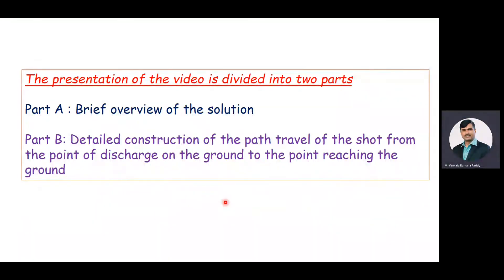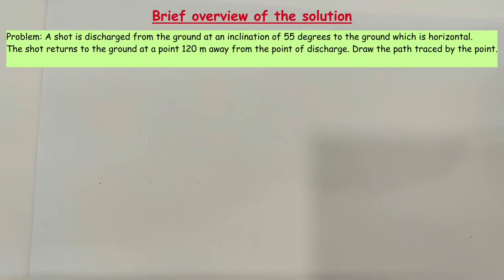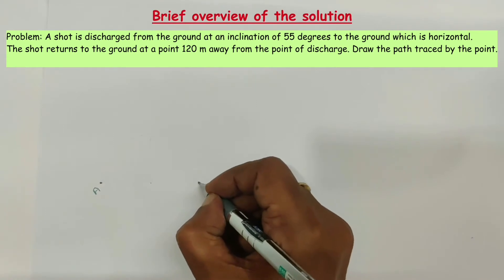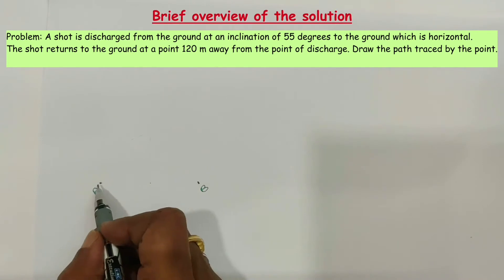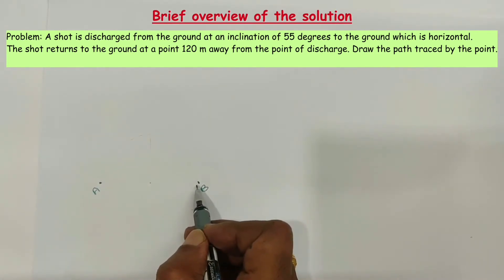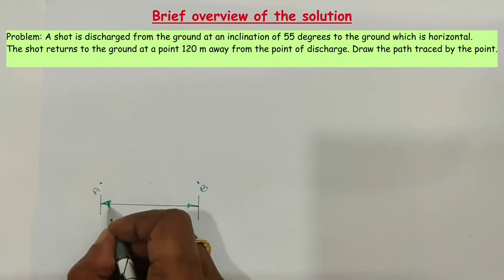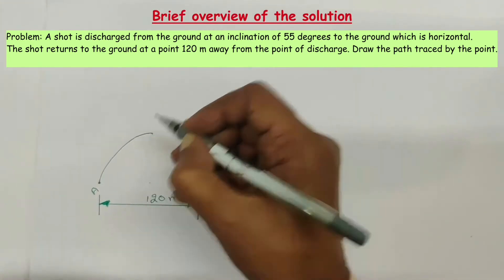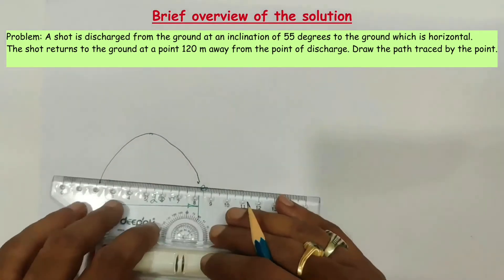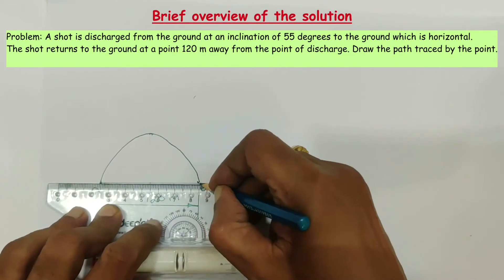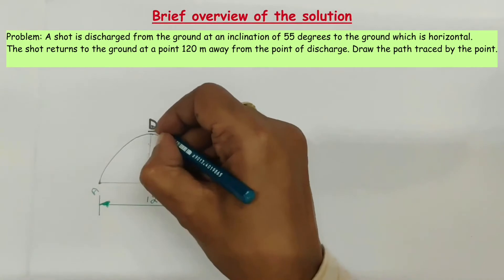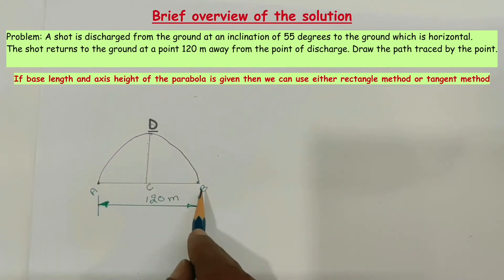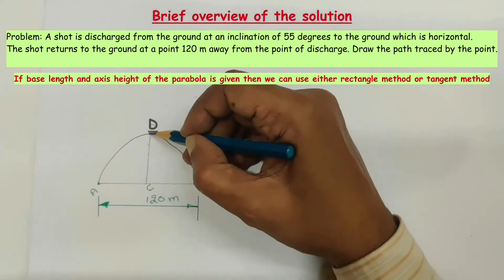Now we will see the brief overview of the solution. A shot is discharging from the ground at point A and again it reaches the ground at point B. The path travel of the shot is a parabolic curve. AB is the base length of the parabola and CD is the axis height of the parabola. Generally for construction of the parabola they supply information like base length as well as axis height.